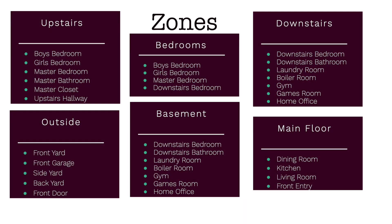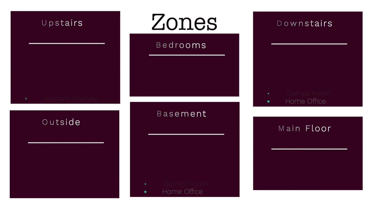To give you a real world example, this is my current setup as far as zones: I have upstairs, outside, bedrooms, basement, downstairs, and main floor. If you look closely, downstairs and basement are identical — we use both of those words to refer to the same space. Being able to have both as a zone means I can say 'shut off the downstairs lights' or 'shut off the basement lights' and it just works. I've also got bedrooms grouped together, and the three main physical spaces of upstairs, main floor, and basement, as well as outside.